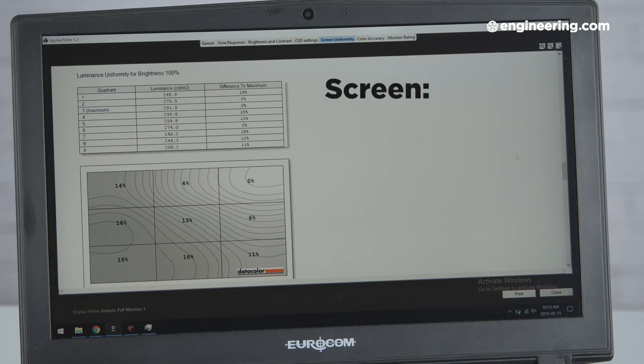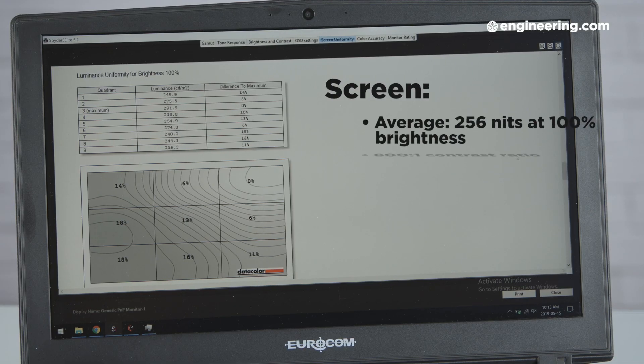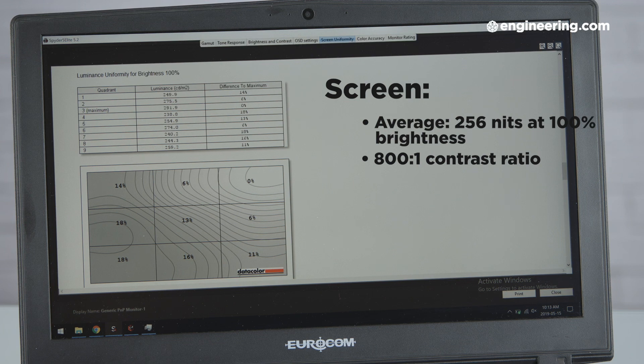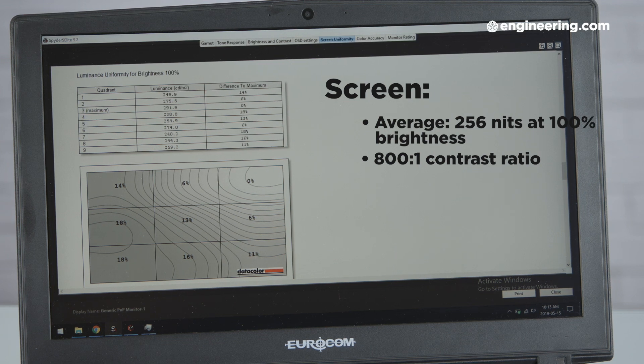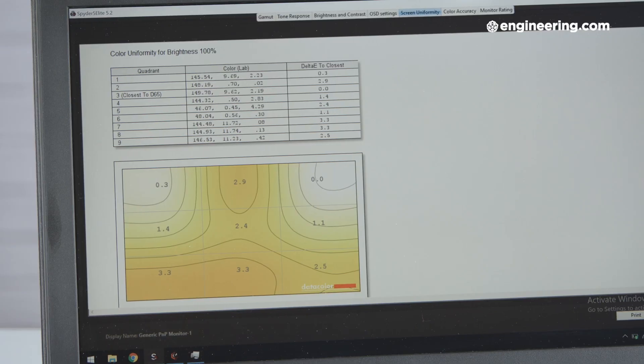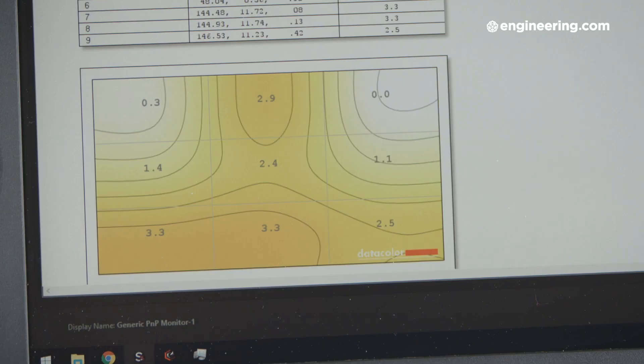It's also on the dim side, with an average of 256 nits at 100% brightness, and a contrast ratio of 800 to 1. The Sky X4C was great at color accuracy, with an average delta E of 0.99, but both accuracy and brightness vary around the screen by as much as 3.3 delta E and 18% luminance.